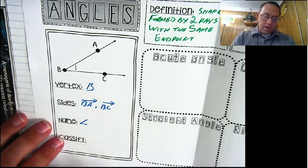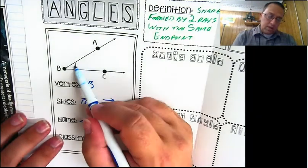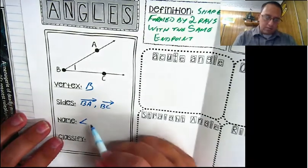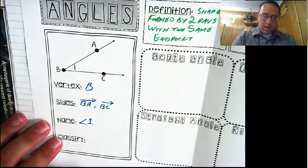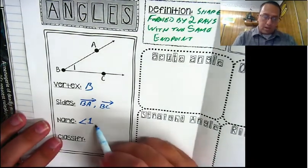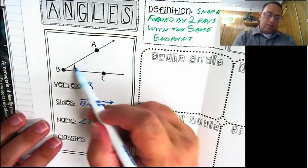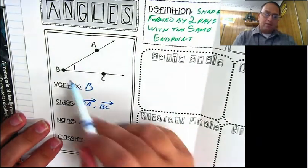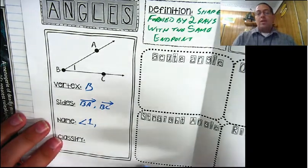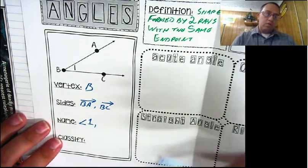So we have the angle symbol, and one thing we can name this - notice there is a little '1' inside the angle. If you have a number inside the angle right there next to the vertex, you can name the angle by that number. So: angle 1.